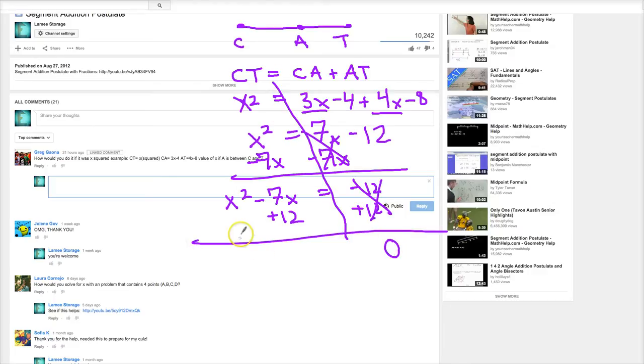None of these can combine, so it becomes x squared minus 7x plus 12 equals 0.